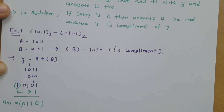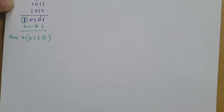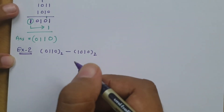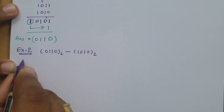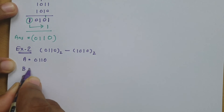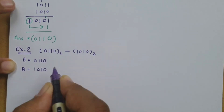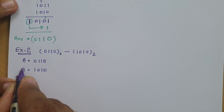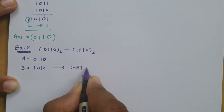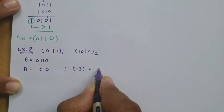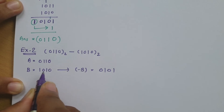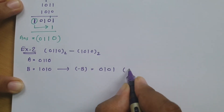Let us solve one more problem. In this second example, A equals 0110 and B equals 1010. We need the one's complement of B. The one's complement of 1010 is 0101 — we replace 1 with 0 and 0 with 1. This is our minus B.